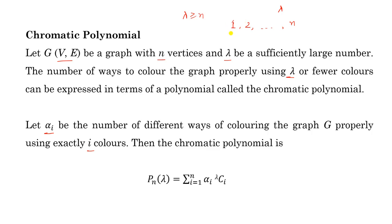When we choose one color out of lambda, we first find the number of ways to choose one color out of lambda colors, which is lambda C 1. Alpha 1 is the number of ways to color the graph using one color. For each of these lambda C 1 ways, we have alpha 1 ways to color the graph properly, so we apply the product rule: alpha 1 times lambda C 1.